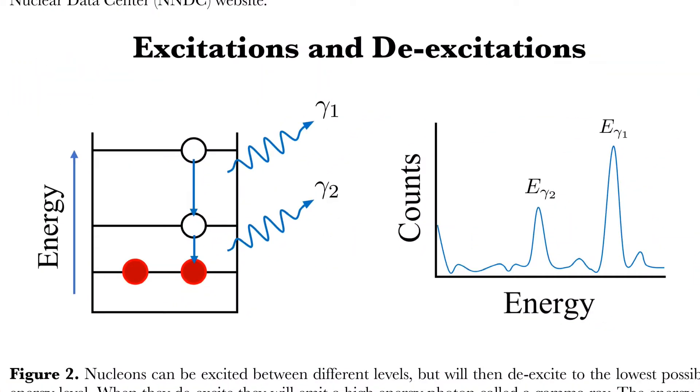As seen in figure three, when a beam particle collides with a target nucleus, the beam nucleus becomes excited. Once it is in an excited state, it is unstable and will then de-excite and in turn emit a photon.